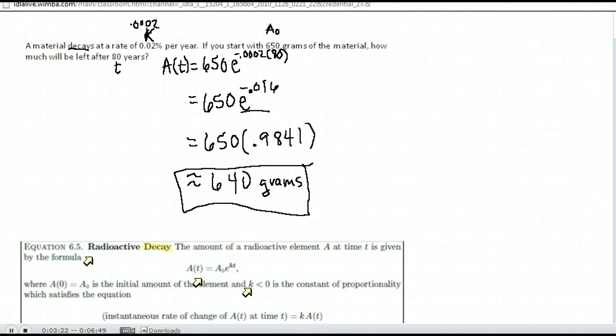Most important things on decay problems, make sure you put a negative for your rate. Okay? And make sure you follow the order of operations. Exponents come first before multiplication.